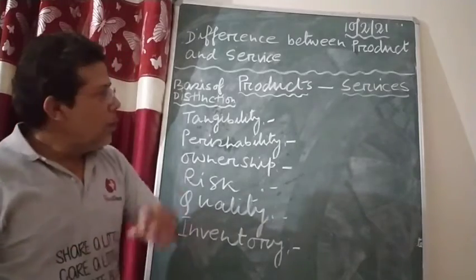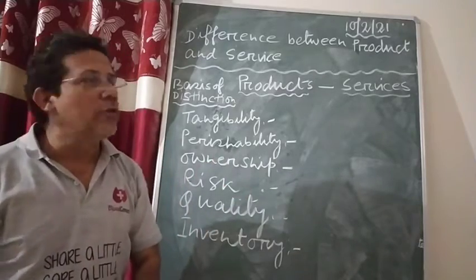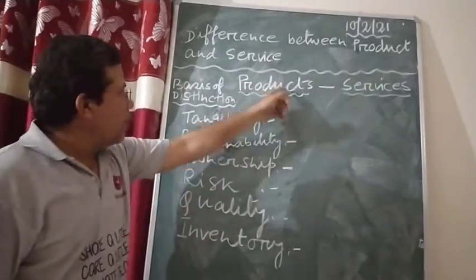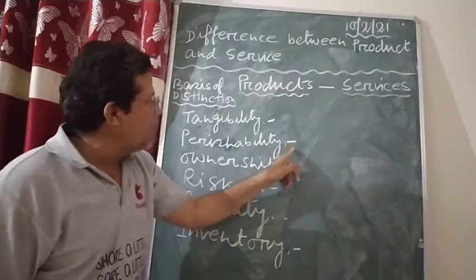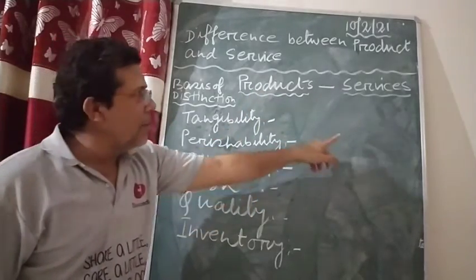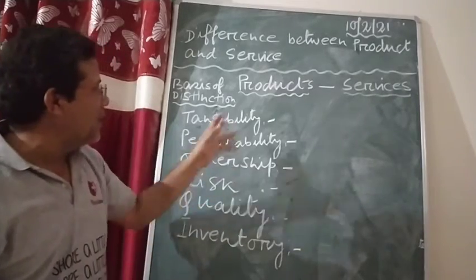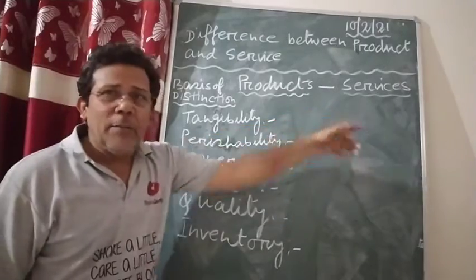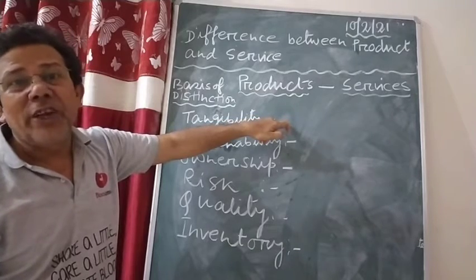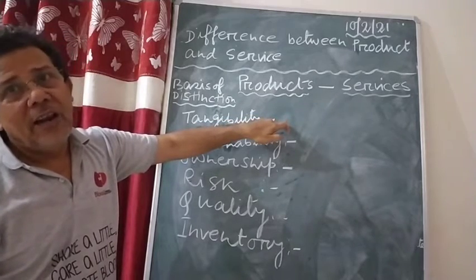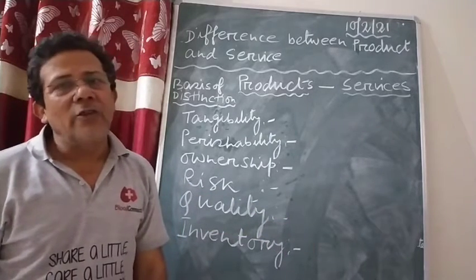One more thing: whenever you write the differences, you are supposed to write them in full sentences. Do not just write 'durable, perishable' — write 'products are durable and services are perishable.' Always write full sentences. For example: 'Products are tangible, which can be seen, touched, and felt. On the other hand, services are intangible, which cannot be touched or seen.' That is how you are supposed to write the differences.